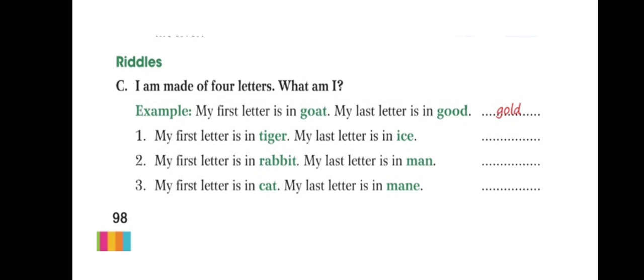Now, the next, C, riddles. Here, children, actually, might be you will get some different answers as well. It doesn't mean actually what the answer is provided and if you find some other words, so that also you can add in this. But, I am made of four letters. That means the word must be of four letters only. Four letter words. If you find some other words, that is also correct. But, I have provided some answer. Now, my first letter is in goat. My last letter is in good. So, G-O-L-D.